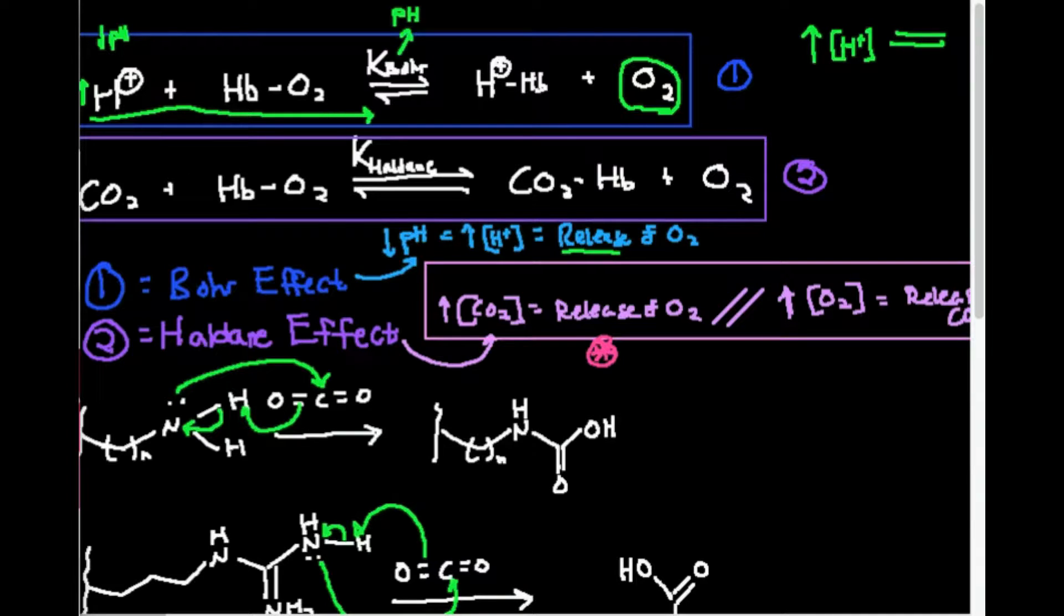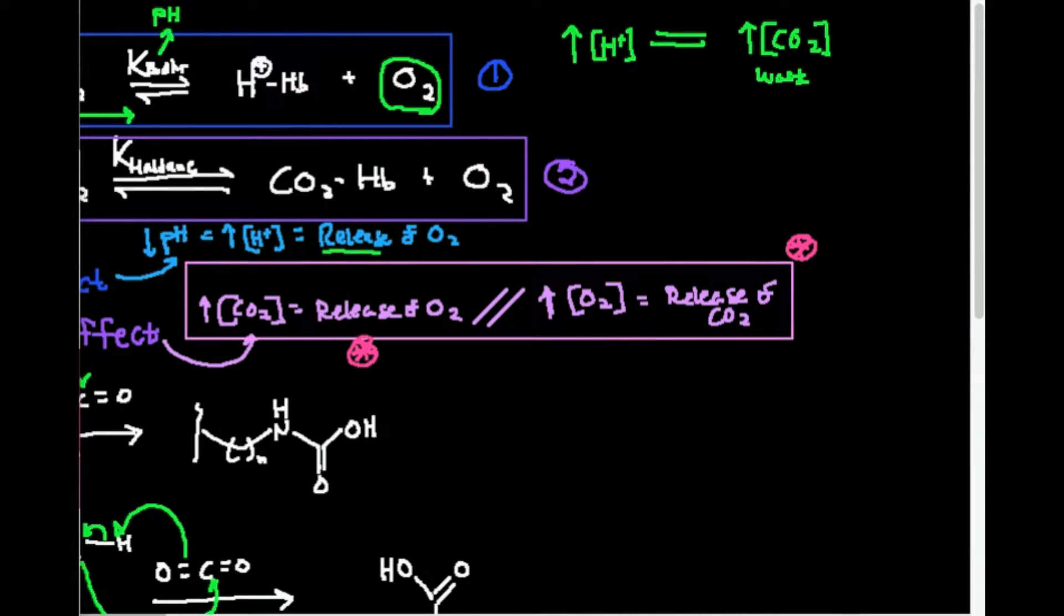The Haldane effect is different, though, than the Bohr effect, because it's not asking how does pH affect oxygen binding. It's saying how does the concentration of CO2 affect oxygen binding? But there's another way to look at it, too. It's not just saying that high CO2 causes release of oxygen. It also says that high oxygen causes a release of CO2.